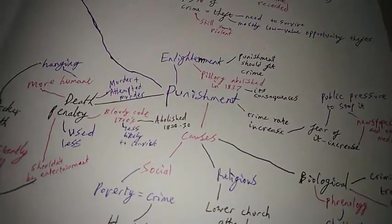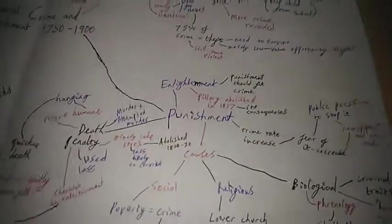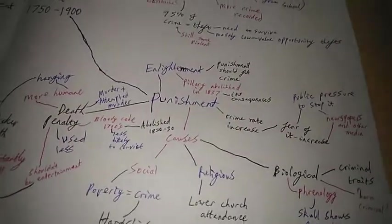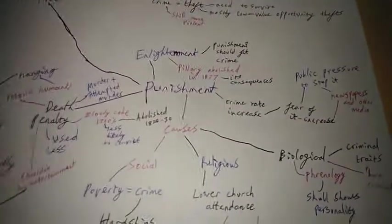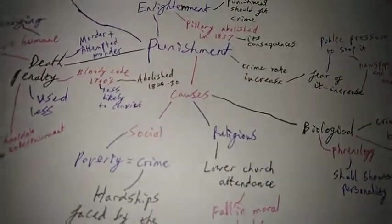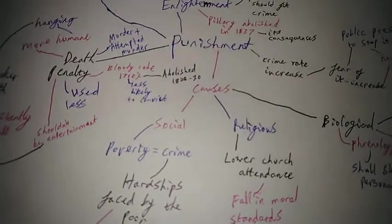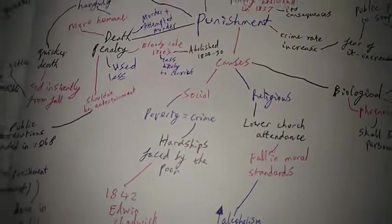So now let's move on to punishment. Some of this I'm unsure of how I put here but here it says causes. I'm assuming this is causes of crime but I just couldn't fit it there. Social causes: poverty causes crime because of hardships faced by the poor.